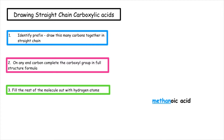From the name we have to identify the prefix and draw this many carbons together in a straight chain. For this example we've got 'meth'. Meth means that we've got one, so we'll just draw one carbon atom.